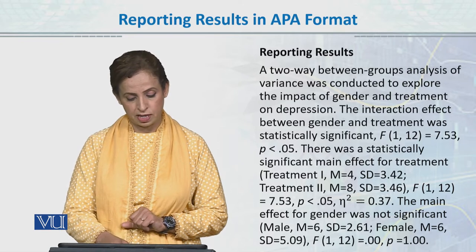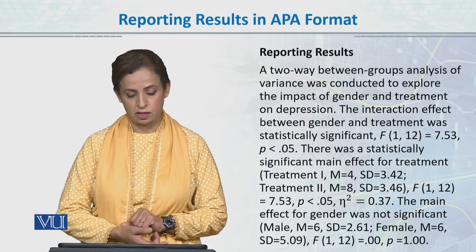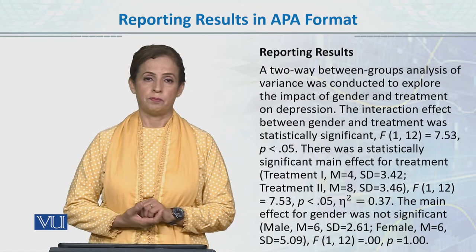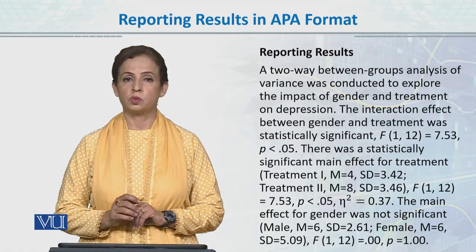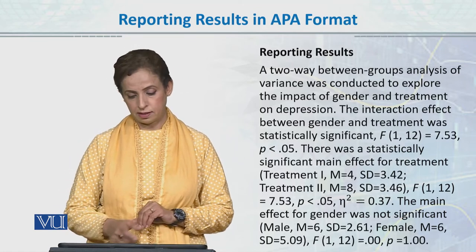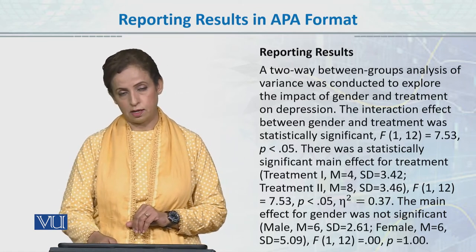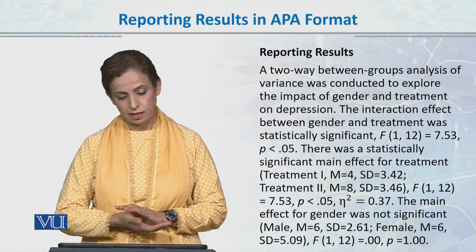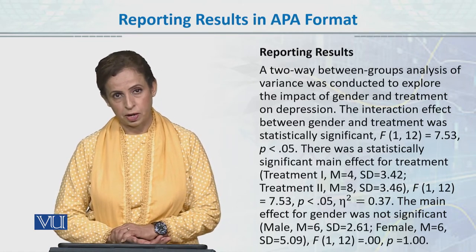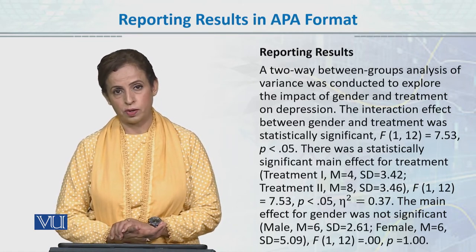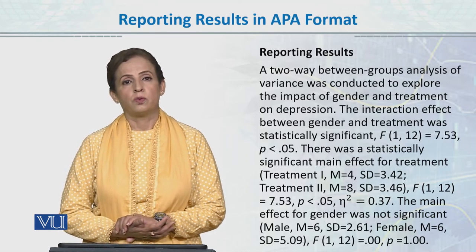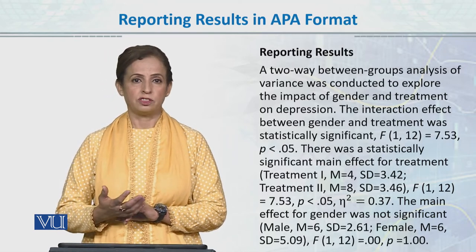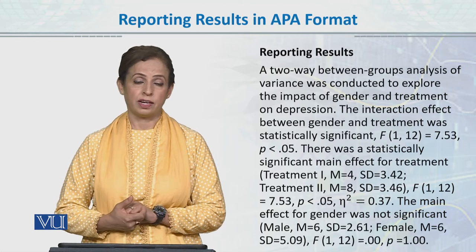The F value is 7.53 and P is smaller than 0.05. Then we report the partial eta-square value. This symbol, which I have written here, denotes partial eta-square. Partial eta-square is a rough estimate for the effect size.